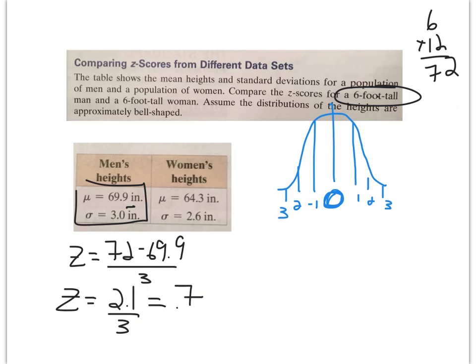My numerator simplified to 2.1, and my standard deviation was 3. When I simplified it, I got 0.7 as a standard deviation.